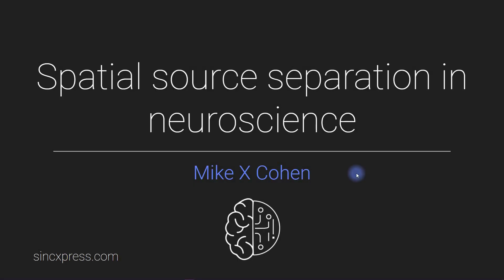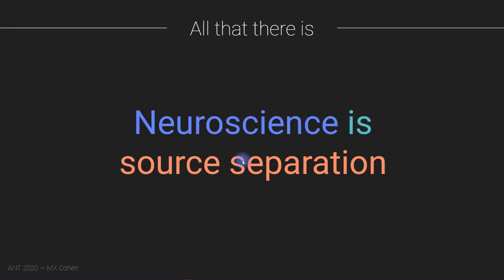This is the second of my two lecture series about source separation in neuroscience. In the previous video, I talked about neuroscience as source separation, specifically temporal source separation and spectral source separation.